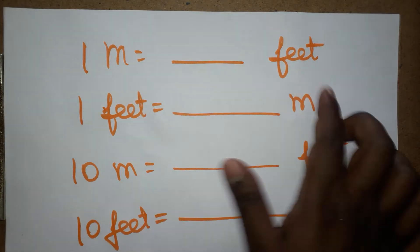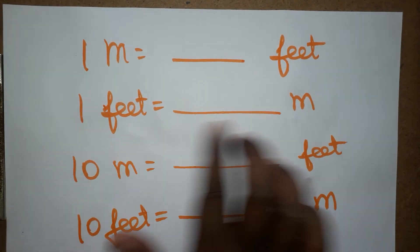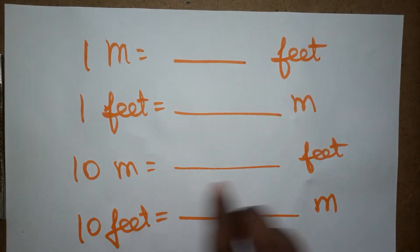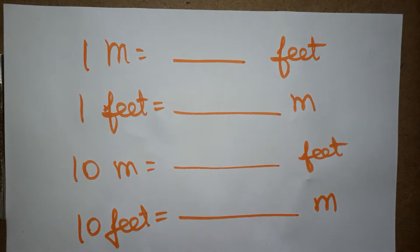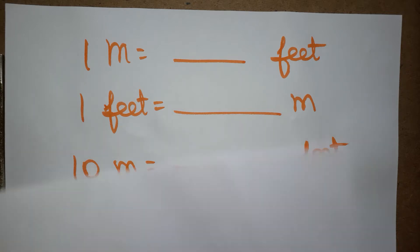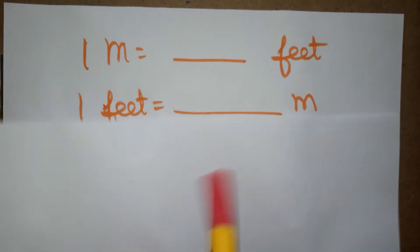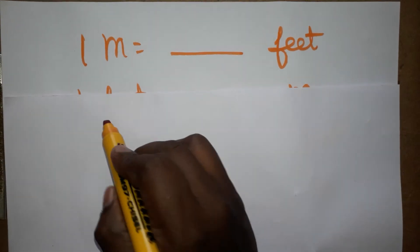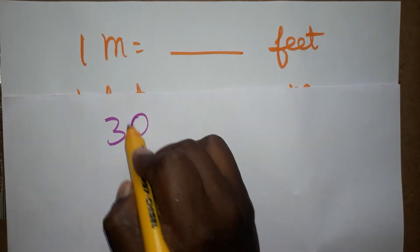We are going to learn: 1 meter is equal to how many feet, 1 feet is equal to how many meters, 10 meters is equal to how many feet, and 10 feet is equal to how many meters. If you like my channel, please subscribe. Thank you for watching.